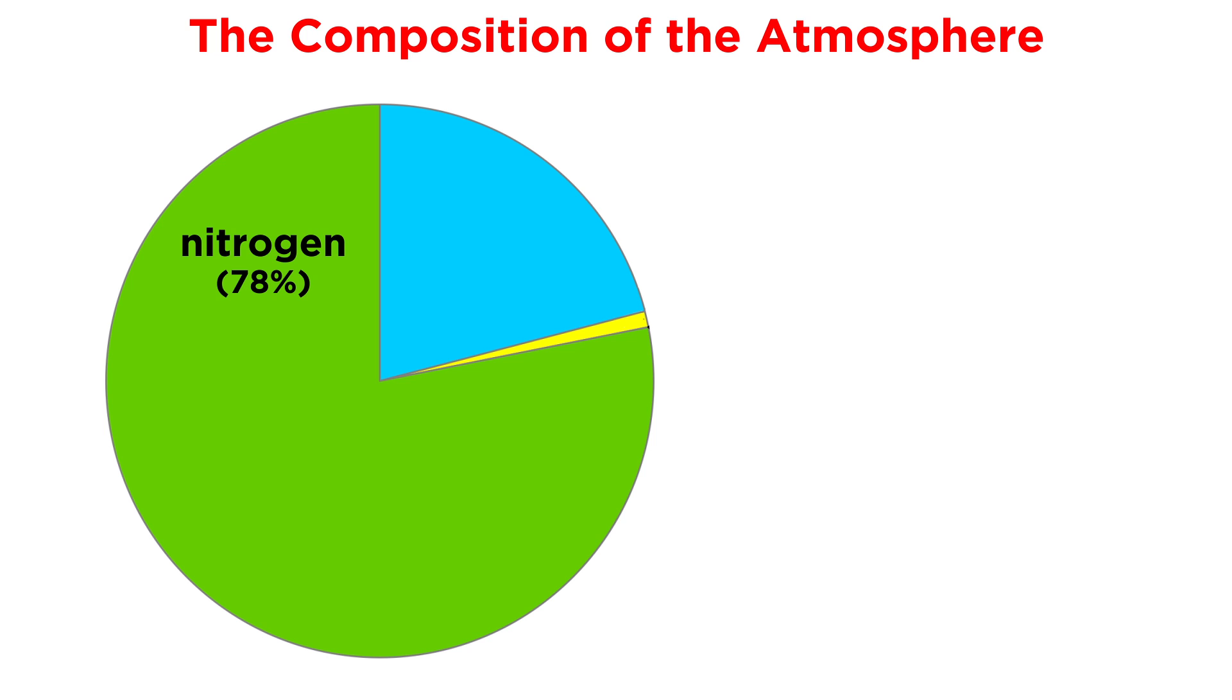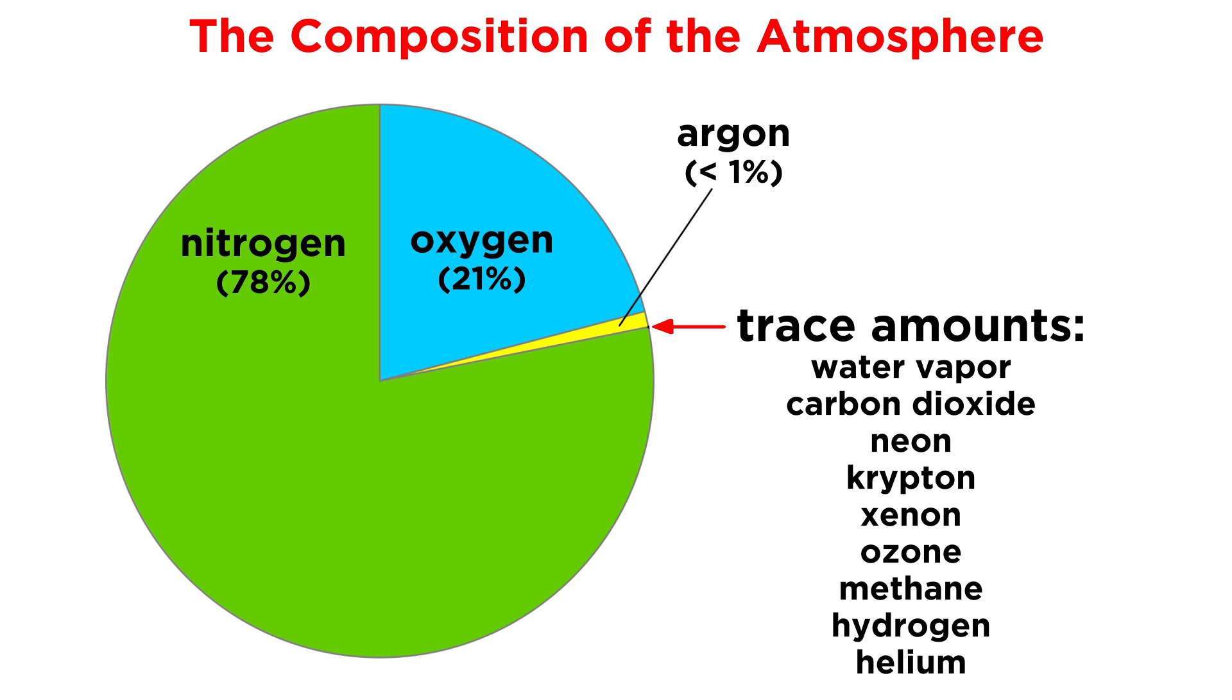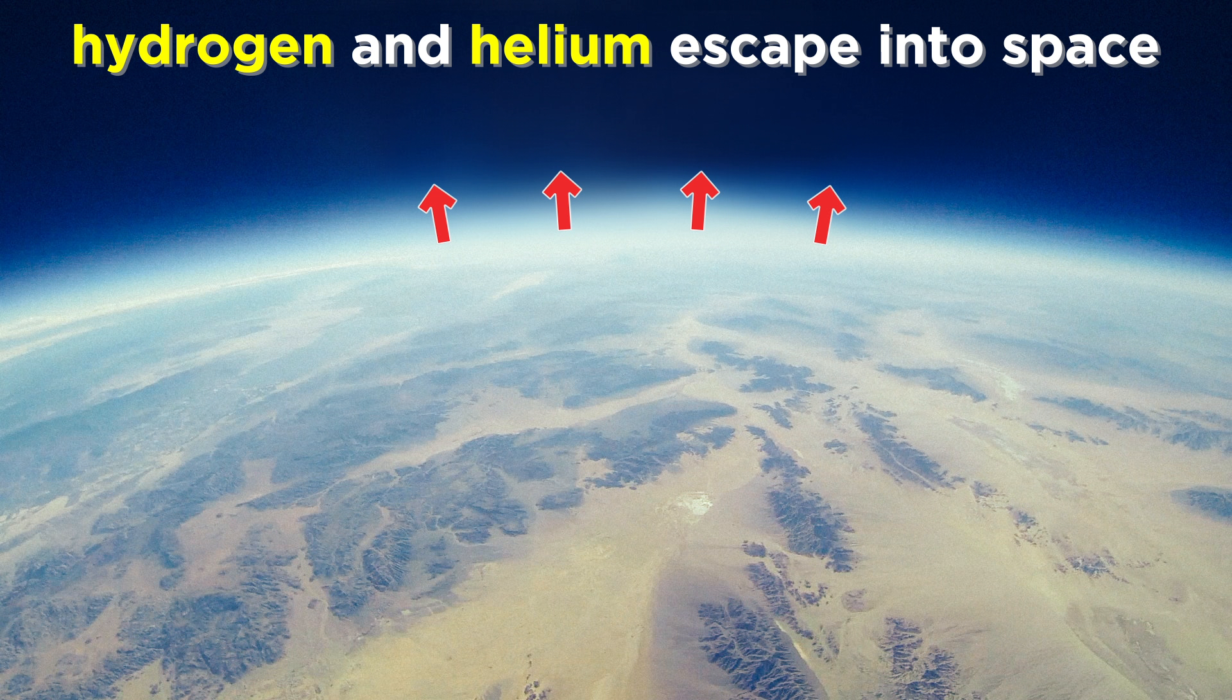These gases include nitrogen, comprising seventy-eight percent of the atmosphere, oxygen, which is most of the rest, and then some argon and just a little bit of water vapor, carbon dioxide, neon, ozone, methane, and a few other things. The very lightest of them, hydrogen and helium, are so light that they can escape Earth entirely, floating off into space.